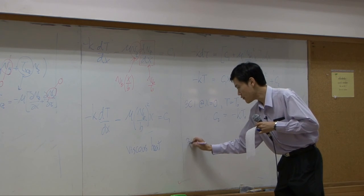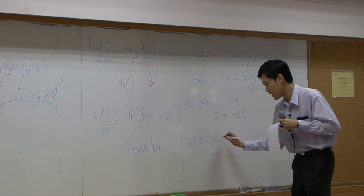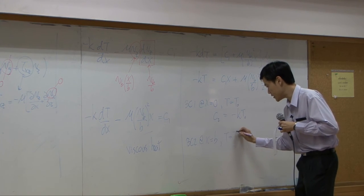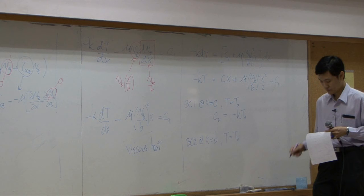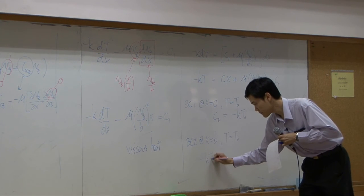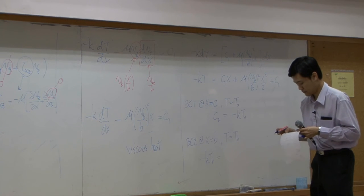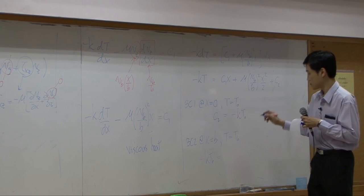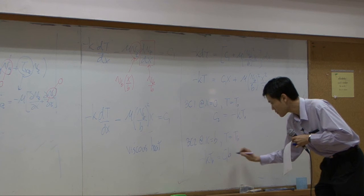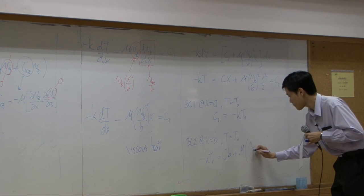Then, you will have second boundary condition. At x equal to b, t equal to tb. Just replace that.